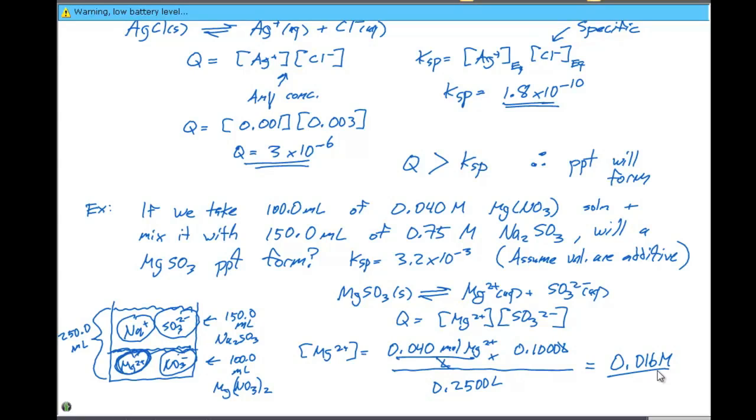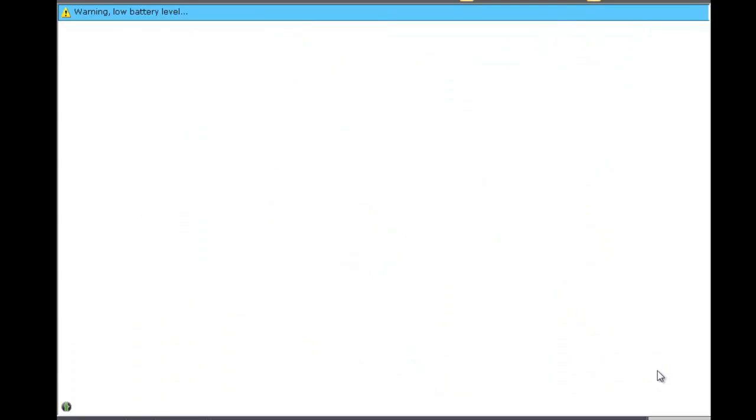Now we need to do the same exact thing for the concentration of SO3 2-. And this is going to be 0.75 moles of SO3 2- per liter times 0.1500 liters, divided by our total volume, which is again 250 milliliters or 0.2500 liters. This gives us a concentration of 0.45 molar.